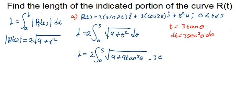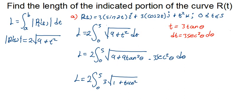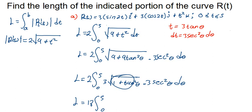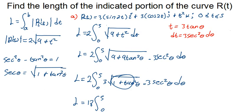Substituting in, L equals 2 times the integral of 3√(1 + tan²(θ)) multiplied by 3sec²(θ) dθ. Using the identity sec²(θ) − tan²(θ) = 1, we know that √(1 + tan²(θ)) = sec(θ). Multiplying through, we get 9 times the integral of sec³(θ) dθ. So L = 18 times the integral of sec³(θ) dθ from 0 to 5.